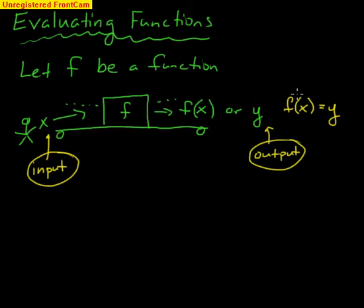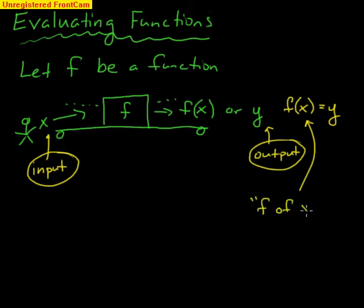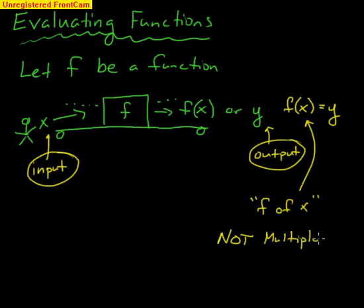Let's write this down. f of x — that is read 'f of x.' You need to understand that this does not mean multiplication. Not multiplication. There is no multiplication going on here. This is notation only. f of x. So do not multiply f times x. It's just f of x.